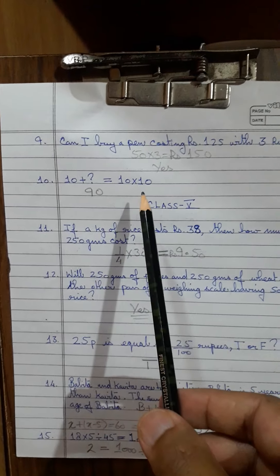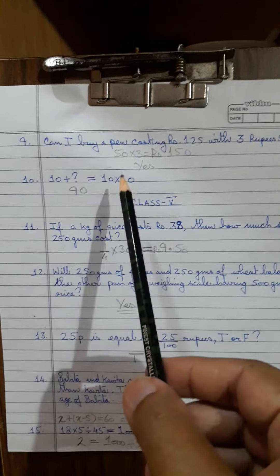10 plus what is equal to 10 into 10. Again, 90. 90 plus 10 is 100. 10 into 10 is 100.